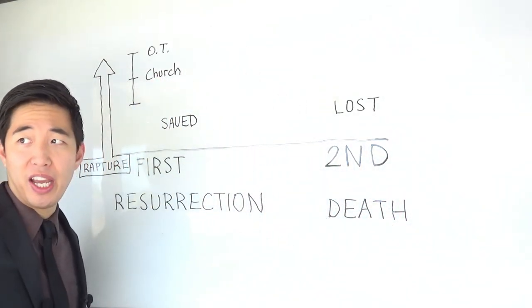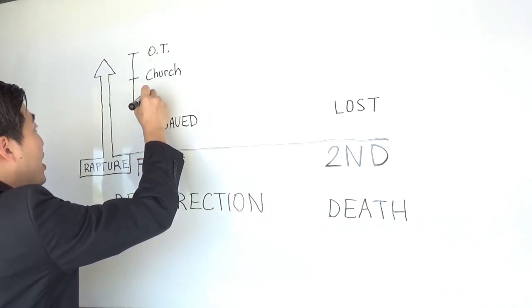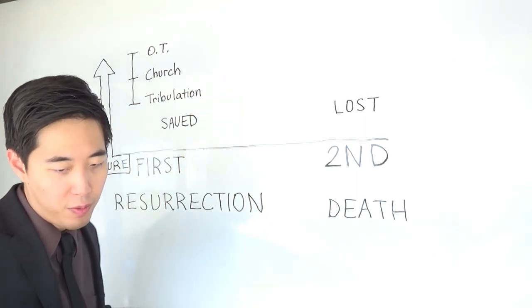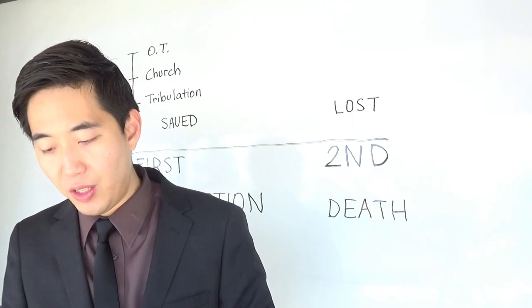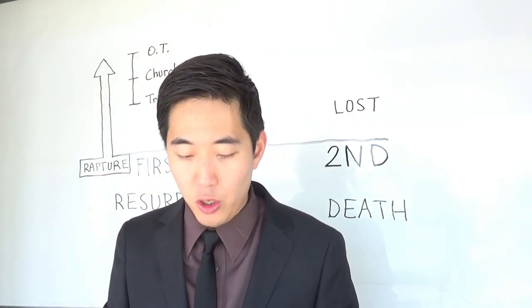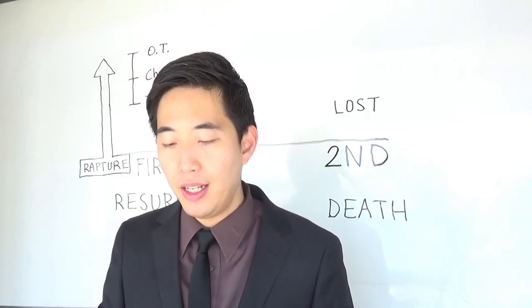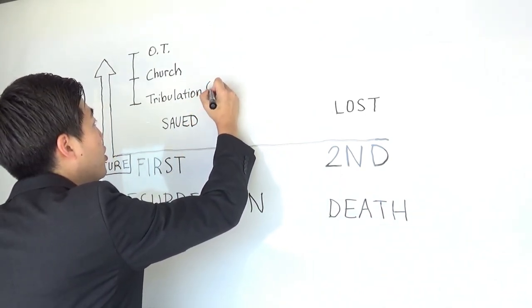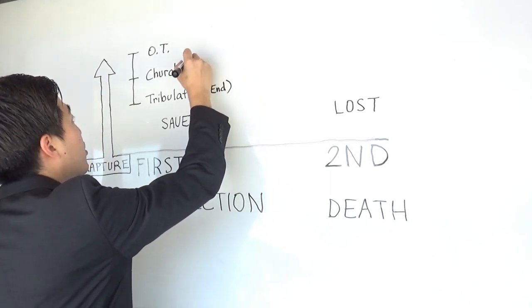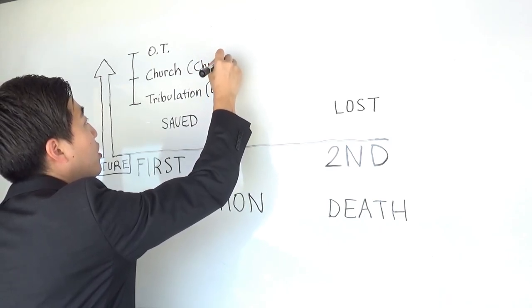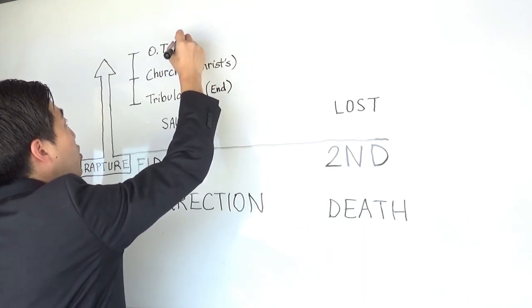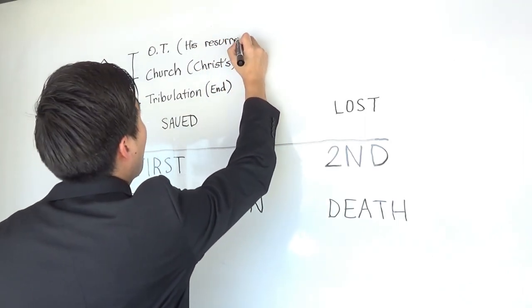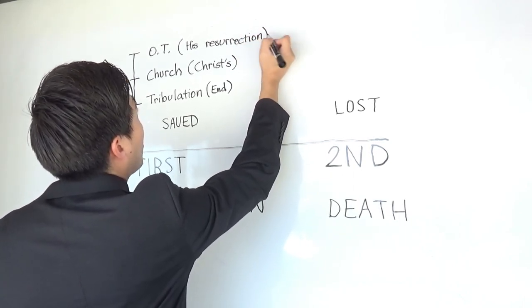So we see over here, they that are Christ at His coming would obviously refer to the church. And then the last one is the tribulation saints. It's undoubtedly the tribulation saints. Because keep reading over here. Go back to 1 Corinthians 15 again. Look at the next part. Verse 24. Then cometh the end. Now, you don't have to turn there, but if you want to, you can turn there. Matthew chapter 24. The tribulation is known as the end. The church is known as Christ. And then the Old Testament, they follow His resurrection. When you look at these wordings, and then compare that with 1 Corinthians chapter 15, it would make sense on that order of His resurrection.